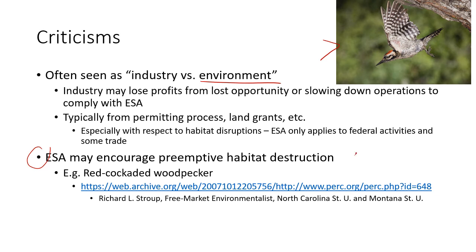One example of preemptive habitat destruction is the red-cockaded woodpecker. Richard L. Stroop, from North Carolina State and Montana State University, argues that when the red-cockaded woodpecker was a candidate for listing, lumber companies went into old-growth longleaf pine forests and preemptively cut down the trees — just to get them down before the listing. They knew the habitat would be protected afterwards, so they took a blitzkrieg approach and cut what they could before it was listed.